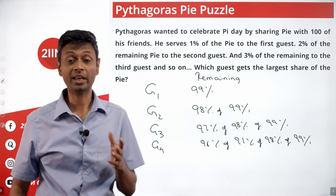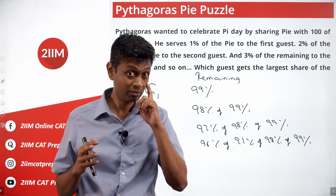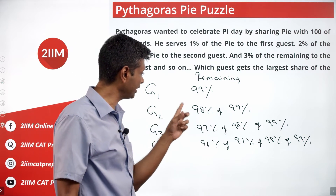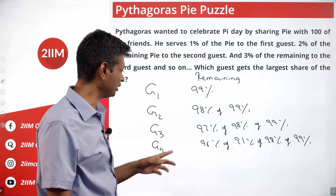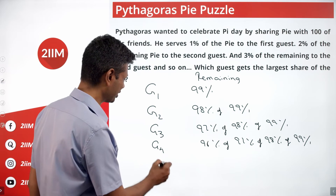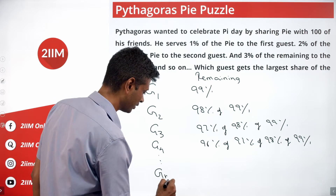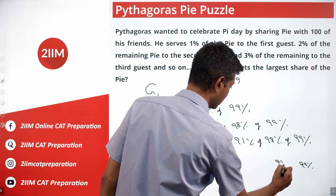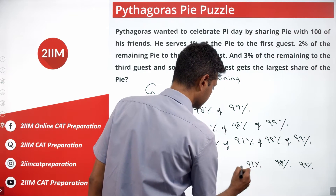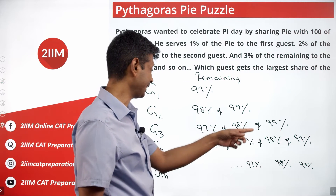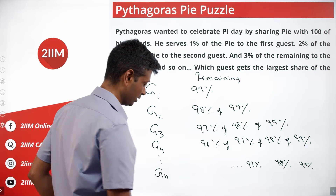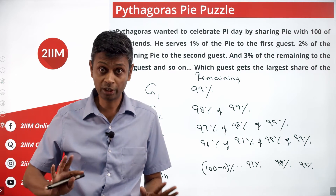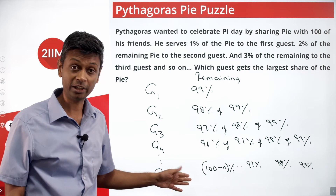Not easy, but at least not as crazy as before. We are not looking to find the answer yet, we are looking to make it simpler. After guest 1 leaves: 99% remaining. After guest 2 leaves: 98% of 99%. After guest 3 leaves: 97% of 98% of 99%, and so on. After the Nth guest leaves, we start from 99% and go down to (100 - N)%, so the remaining is (100-N)% of ... all the way to 99%.